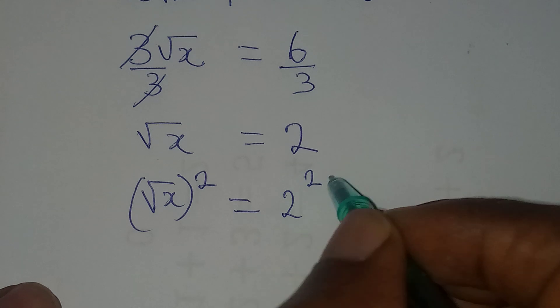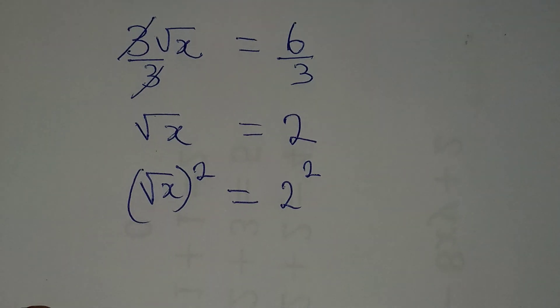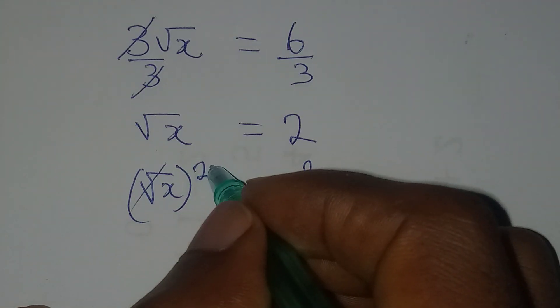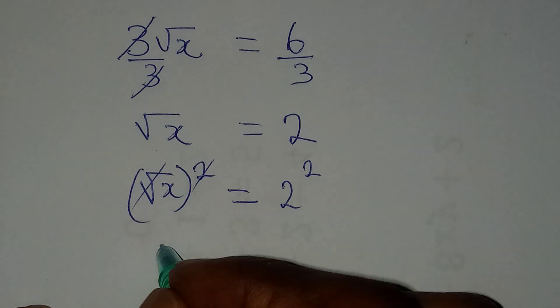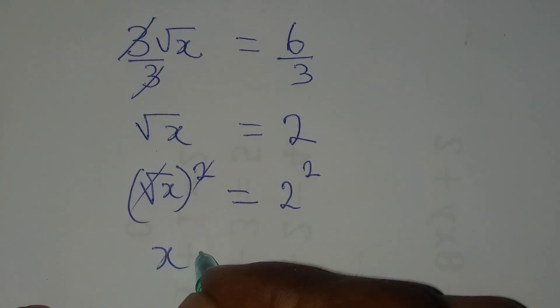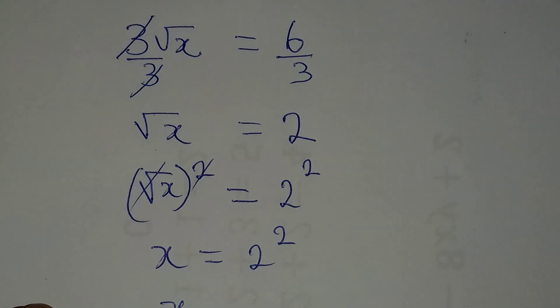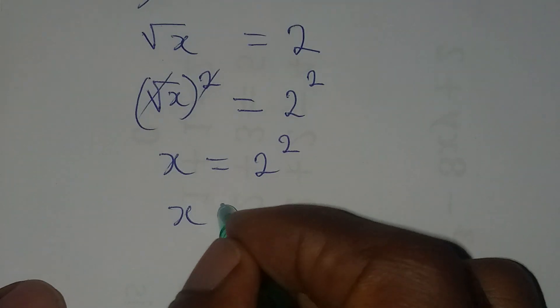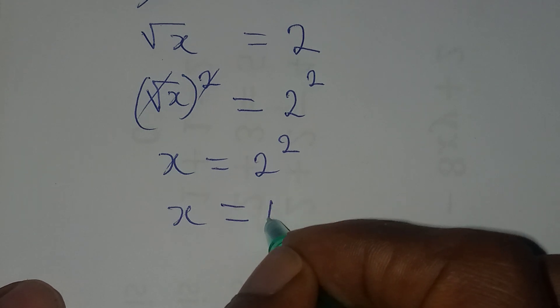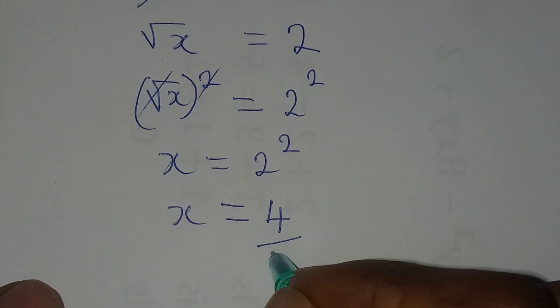So I'm going to square 2. And then from here, the square root and the square will cancel each other. So that x will be equal to 2 squared, and then it means that x is actually equal to 4, because 2 squared is 4.